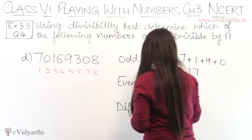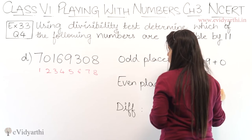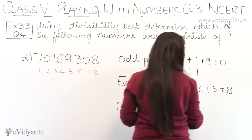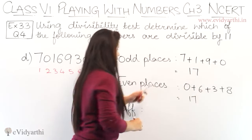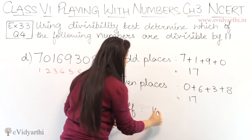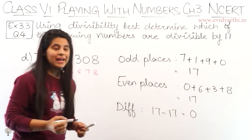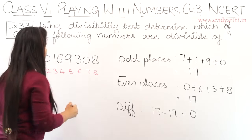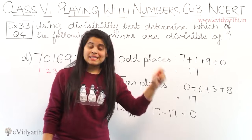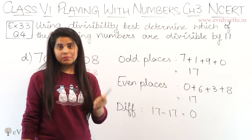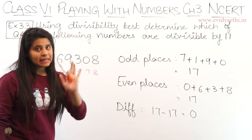Now, even places have digits 0, 6, 3, and 8. So, 0 plus 6 plus 3 plus 8: 6, 7, 8, 9, and 9 plus 8 is 17. So the sum of even place digits is also 17. Now, finding the difference: 17 minus 17 equals 0. This means the entire number is divisible by 11, because the difference is 0.